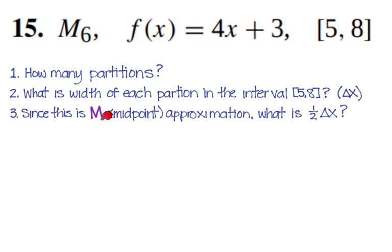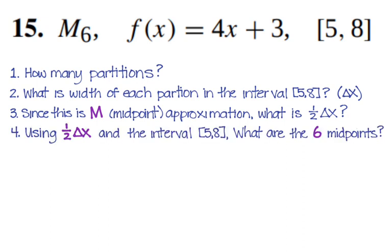But because this is M, midpoint, we need to find out half of delta X. So you're going to have eight minus five divided by N, and then take half of that. Why do we need that? Because we need to find those midpoint endpoints, or the midpoints is what we're going to say, the midpoints.